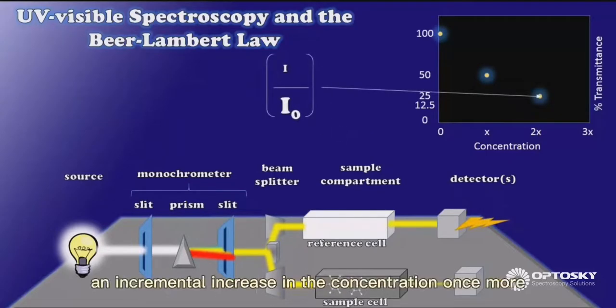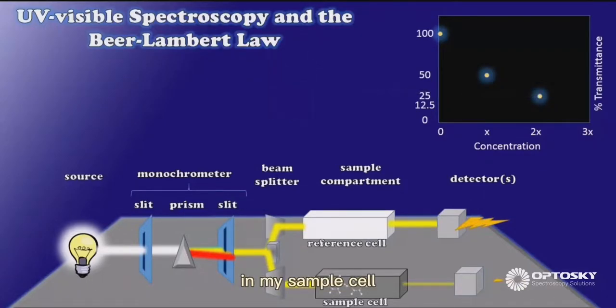And similarly, an incremental increase in the concentration once more in my sample cell leads to another reduction by 50%, and therefore a percent transmittance of 12.5%.